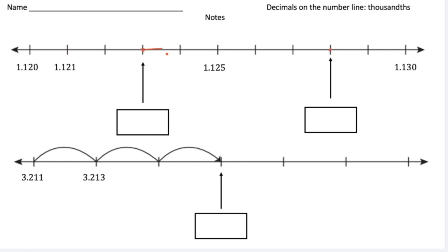So the secret is we have to figure out the value between each little mark. So we know that right here we have 1.120 or 1 and 120 thousandths. And here we have 1 and 121 thousandths.